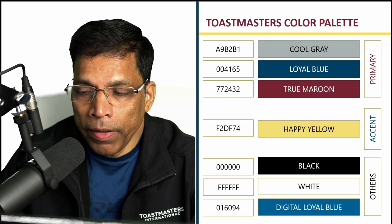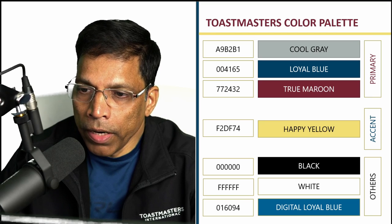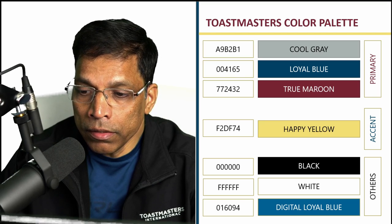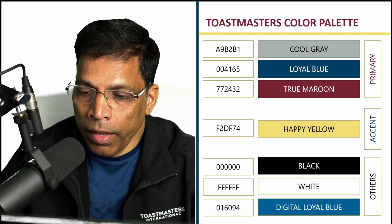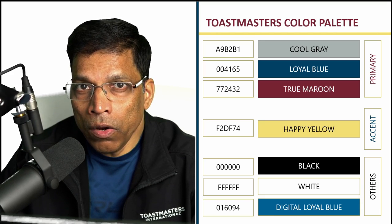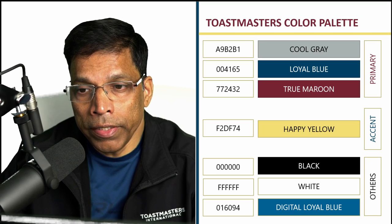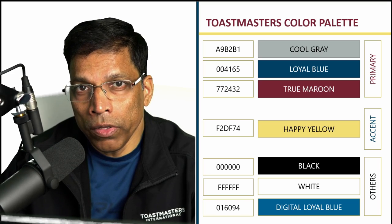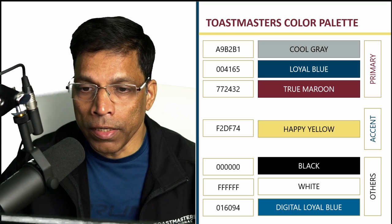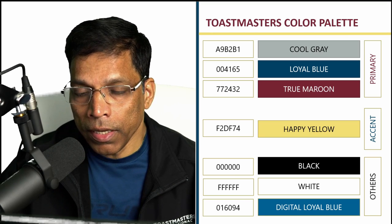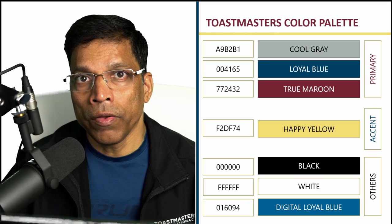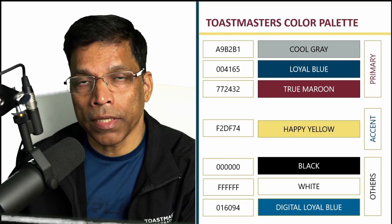The Toastmaster color palette consists of three primary colors: cool gray, loyal blue, and true maroon. One accent color called happy yellow, and the black and white colors, along with a color called digital loyal blue which can only be used as a gradient along with the loyal blue color. Each color is defined with a precise color code represented as hex codes, because in Canva we can directly type hex codes when defining colors for our objects and fonts.